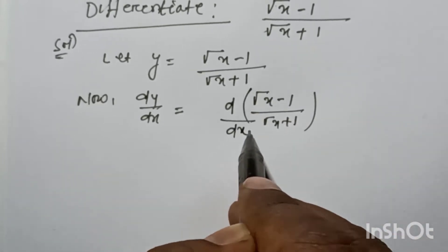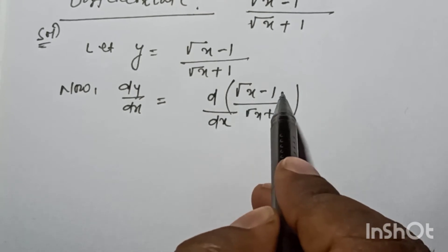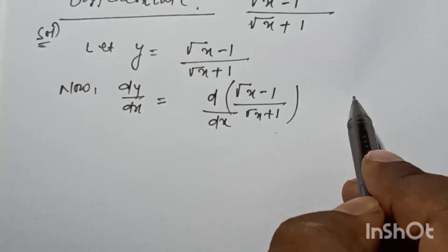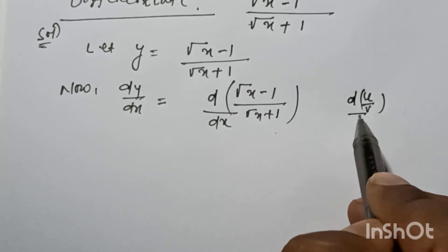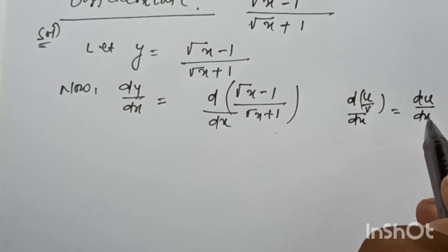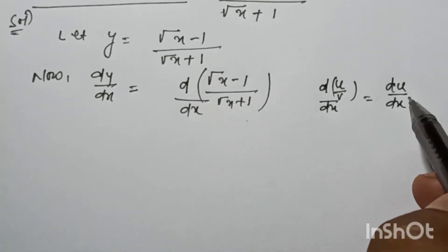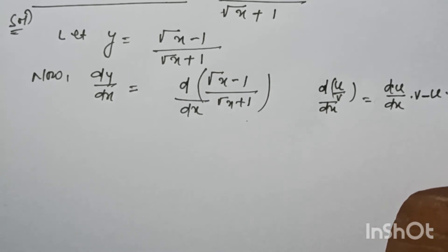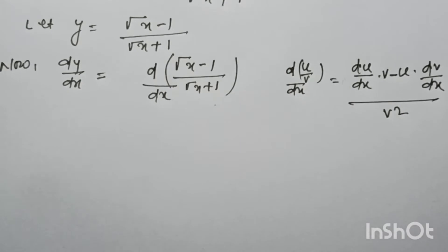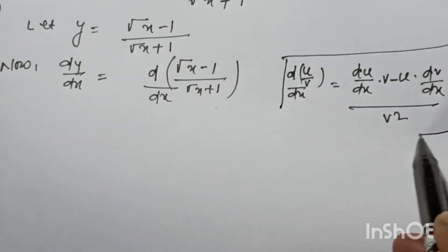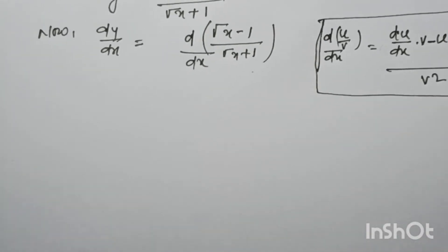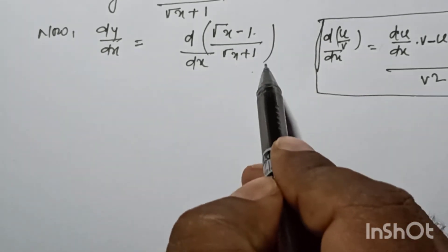Now dy by dx is equal to d of root x minus 1 by root x plus 1, by dx. We apply the derivative of division formula — that is, du by dx into v minus u into dv by dx, divided by v square. We know this formula.